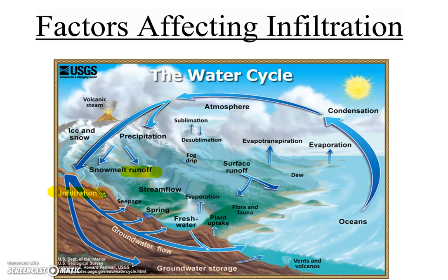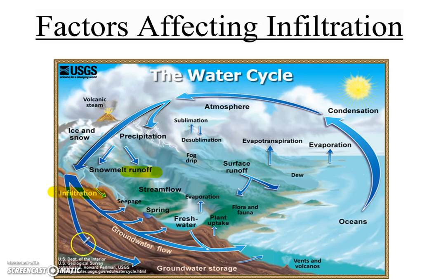Keep in mind through this video that precipitation can only do one of those two things at a time. If the precipitation is infiltrating, then it's not becoming runoff. And if it's becoming runoff, then it's not infiltrating. So if one goes up, the other will go down, meaning there's going to be an indirect relationship between them. So let's take a look at a couple of the factors that affect the speed at which water can infiltrate.